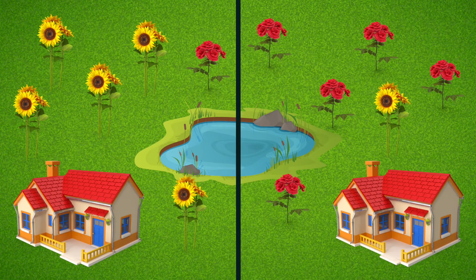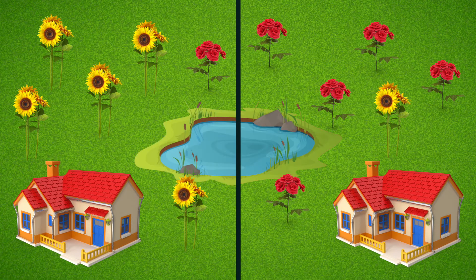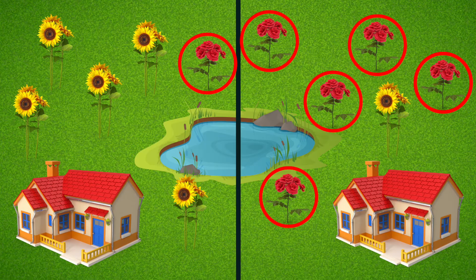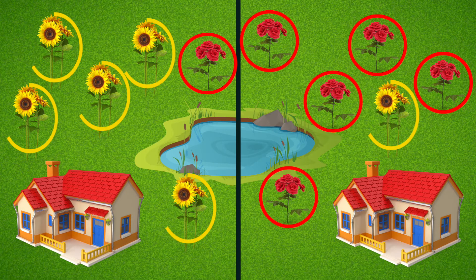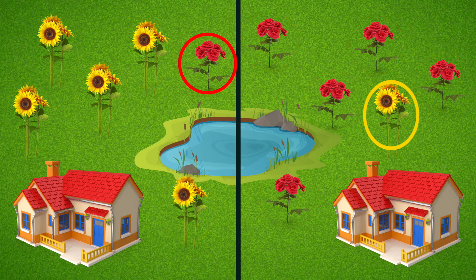Geometric borders are often used in political agreements to prevent conflicts, like this border between the US and Canada. Would this geometric border resolve our conflict? Well, we'd both have access to the pond, but there's another issue: these red roses are mine and the yellow sunflowers are his. This border would split our flowers apart, and I want all of my roses on my property.